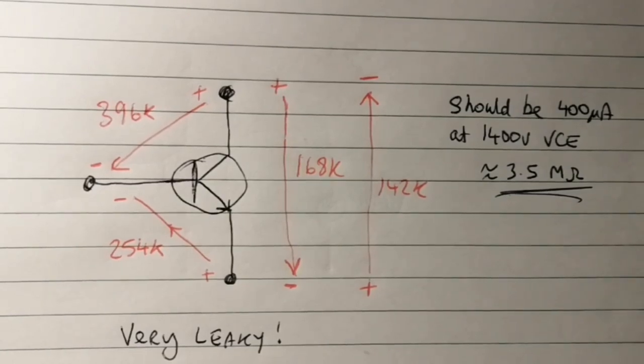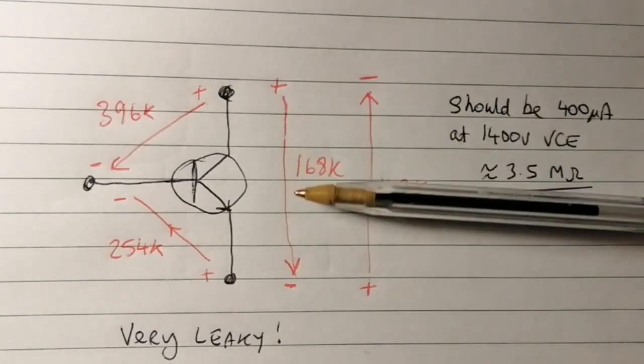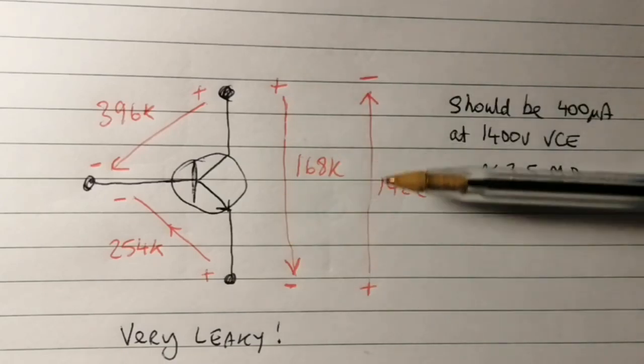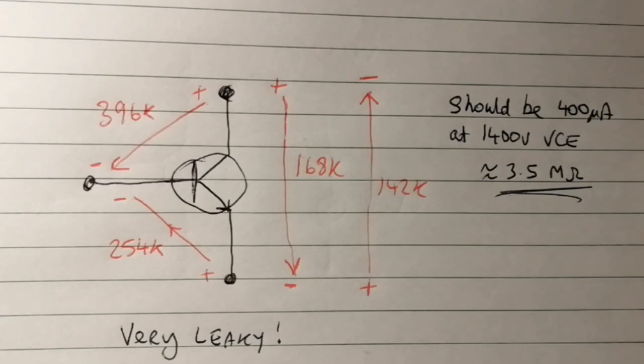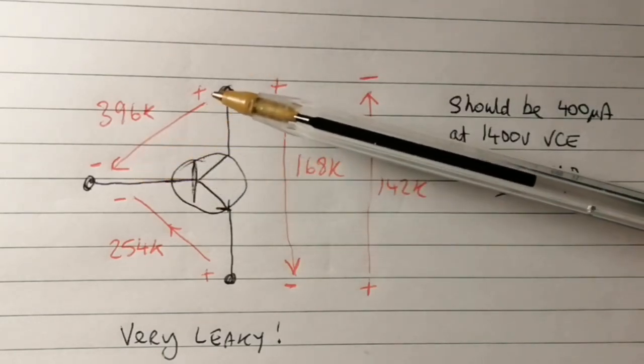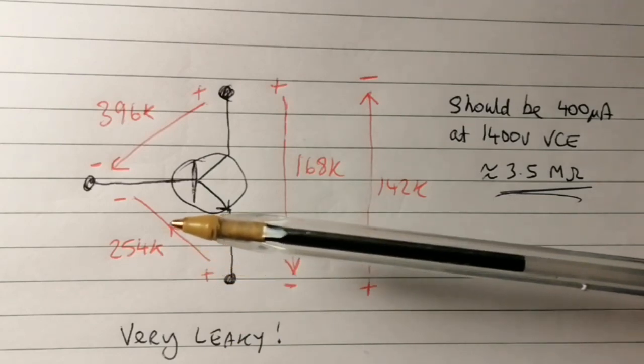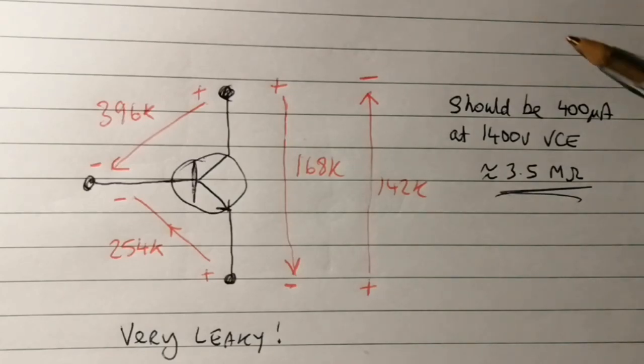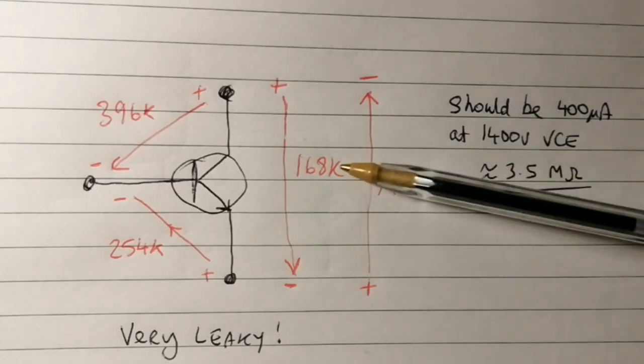Another thing that concerned me was the leakage. I mean, this is a big device, so I would expect it to leak a bit. I'm only used to normal transistors, and they don't leak as much as this. I was only testing at a low voltage, perhaps 0.2 of a volt, and I was getting like 168K from collector to emitter one way, or 142K the other way. The reverse biased collector-base junction, I was getting 396K. Reverse biased base-emitter, I was getting 254K. Well, the datasheet says it should leak no more than 400 microamps at 1400V VCE, and that equates to about 3.5 megaohms, which is much bigger than these.